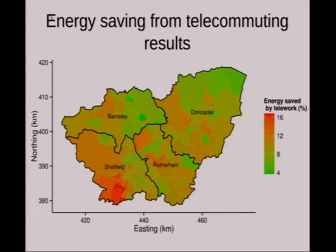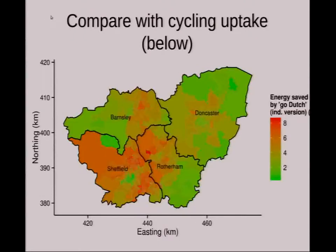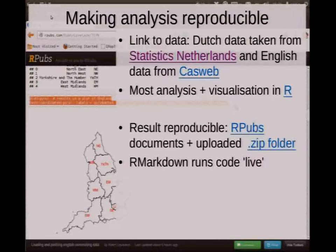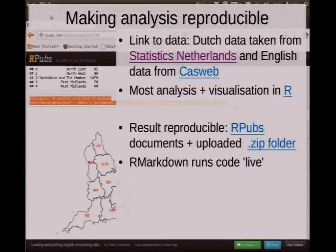The next slide compares that directly with an individual-level implementation of the GoDutch scenario — you can see it shifts greatly over space. A little about how I made these maps and how to make them reproducible. The results are quite surprising, and I just want to be as transparent as possible. I've got on the presentation — which I'll put up on my website — links through to the data sources. In the case of the Dutch data it goes directly to the hard data, though you need an academic login. I've done most of the analysis and visualisation in R. It's all scripted — you have your input files in one folder and just run a script, and you can reproduce precisely the results.